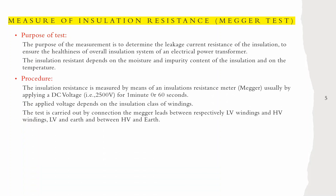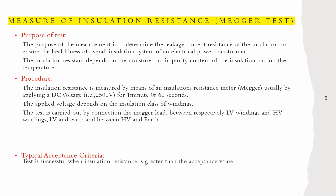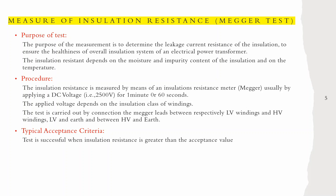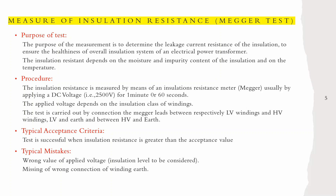The procedure: insulation resistance is measured by means of an insulation resistance tester (megger), by applying DC voltage — for example, 2500 volts (2.5 kV) — for one minute or 60 seconds. The applied voltage depends on the insulation class of the winding. The test is carried out by connecting the megger leads between LV winding and HV winding, LV and earth, and between HV and earth. Acceptance criteria: successful when insulation resistance is greater than the acceptance value. Typical mistakes: wrong applied voltage, missing or wrong connections of winding to earth.